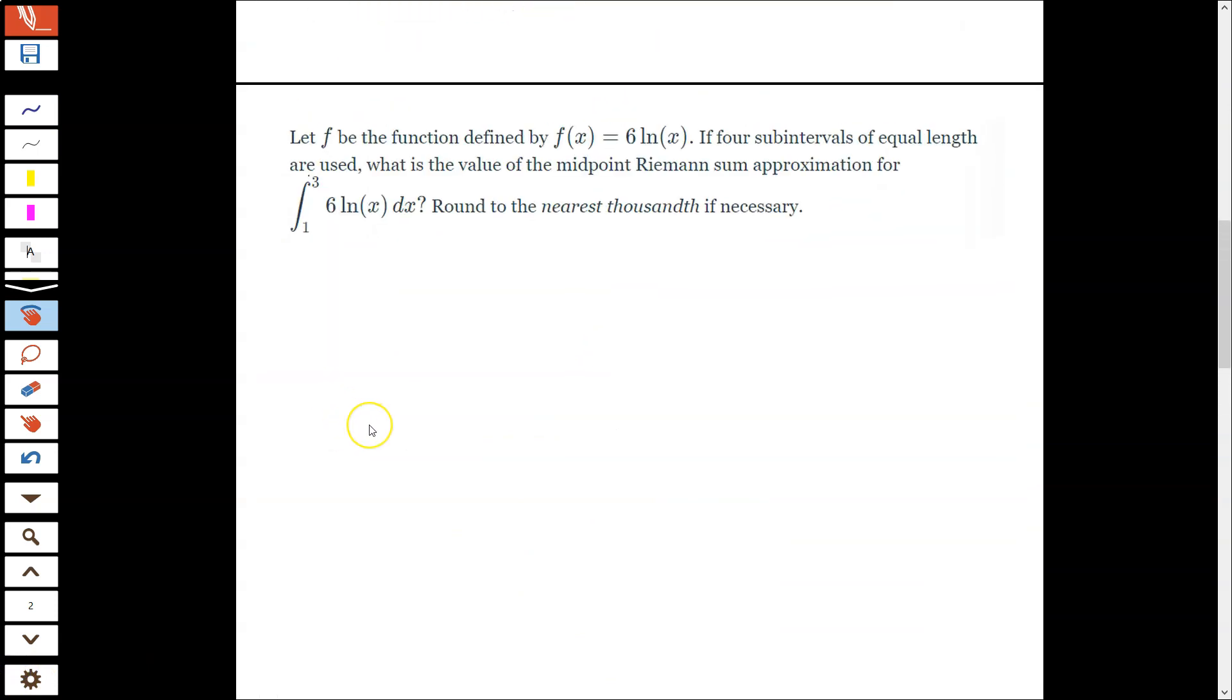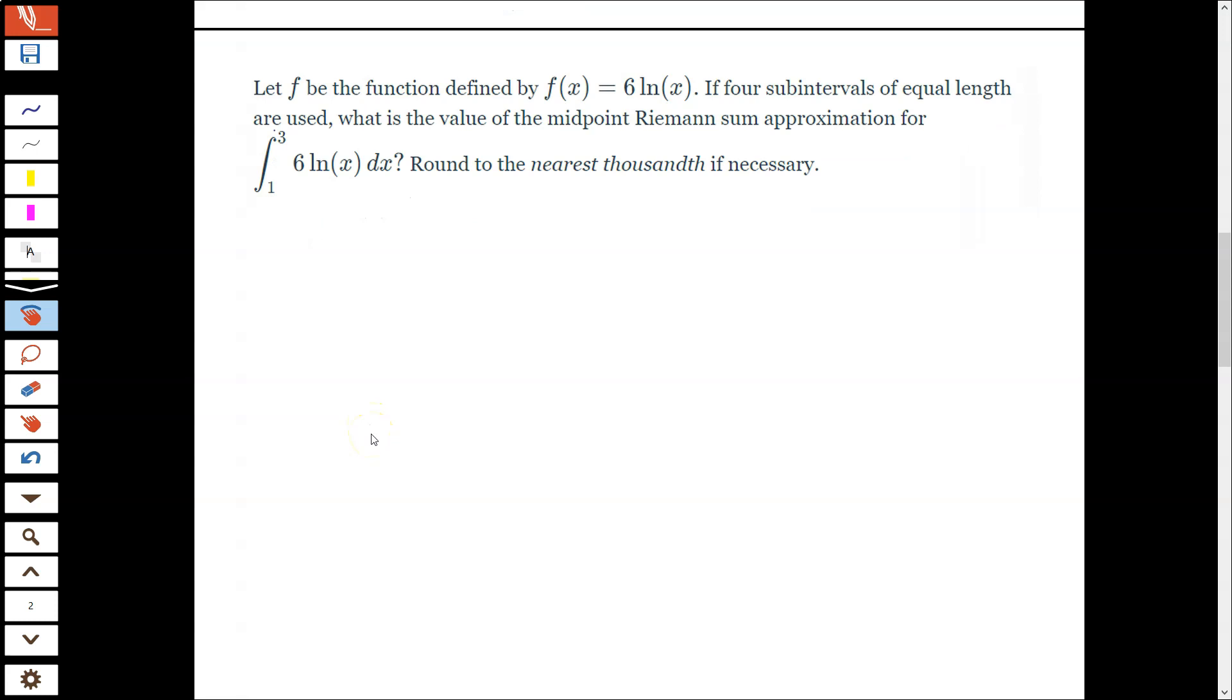So this is one of the more involved problems compared to the last one. We have f is a natural log function this time. And we want four subintervals of equal length. And we want a midpoint Riemann sum. So you're going to have to read these to figure out which type of sum we're finding here. We want a midpoint Riemann sum. So here, remember our bounds, 3 minus 1 over 4. That's going to give us 2 over 4 is 0.5 is our subinterval length.